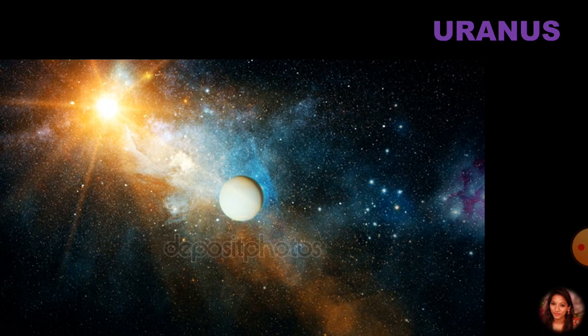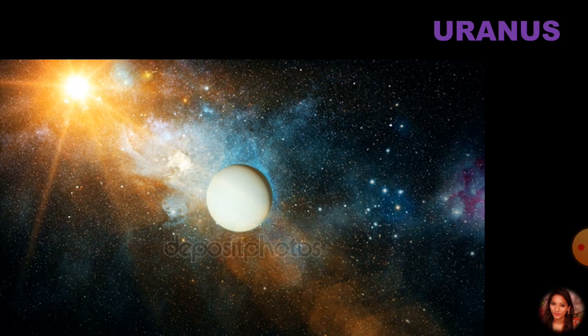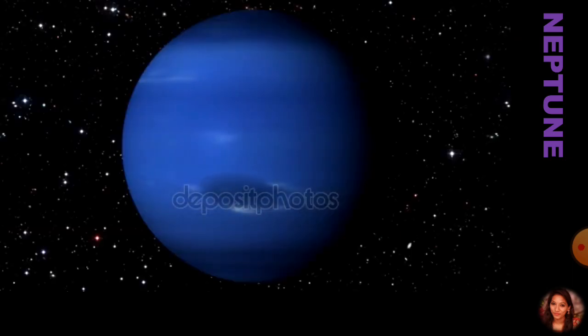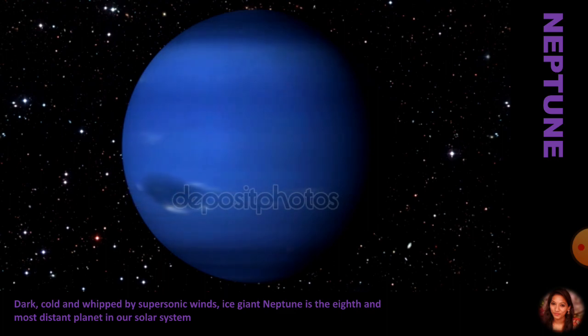Now let us shift towards the last planet, that is Neptune. Neptune is very slow, dark, cold, and whipped by supersonic winds. The ice giant Neptune is the eighth and the most distant planet in our solar system. Neptune is the coldest one, the darkest one, the farthest one, and the last one.